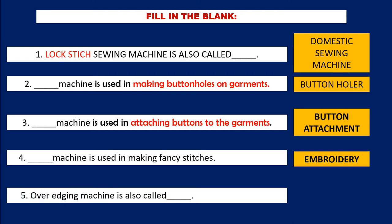Number five: Over-edging machine is also called blank. The correct answer is small machine. Over-edging machine is also called small machine.